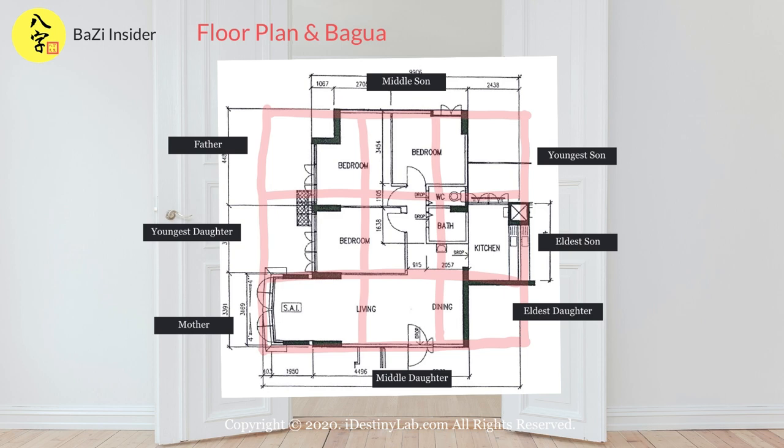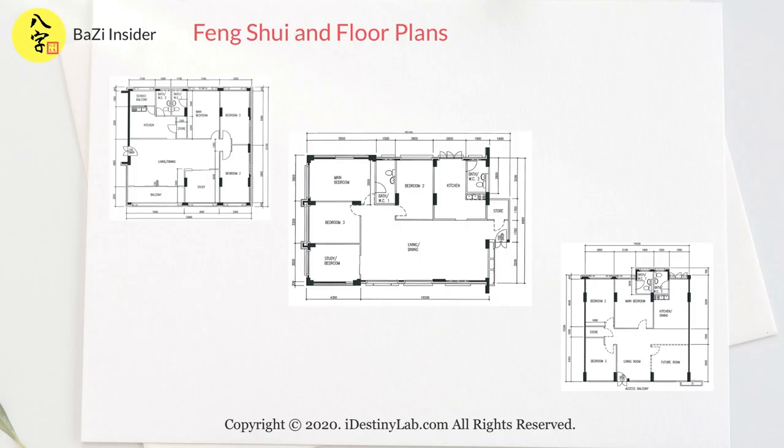So let's take this unit for example. Straight away you can tell that the father, youngest daughter, youngest son, and elder daughter would likely be affected. I use the word lightly as much more analysis is required.